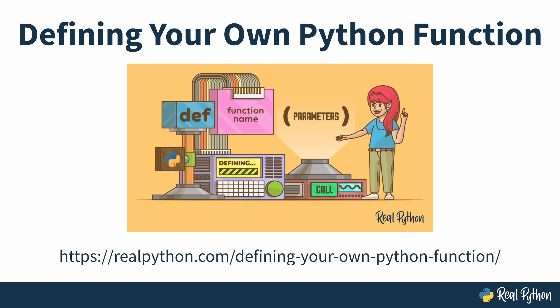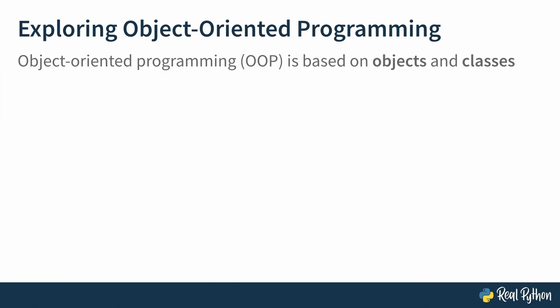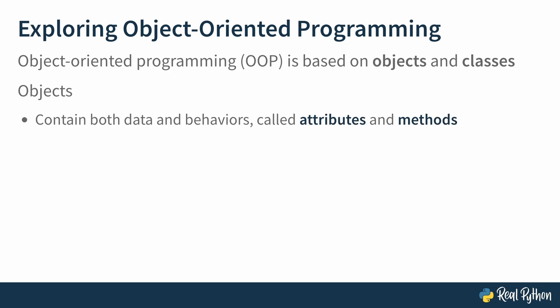Next up, we'll take a 10,000-foot view on object-oriented programming and its place in the Python ecosystem. OOP is a programming paradigm used in a wide variety of languages. At a basic level, it's all about structuring your code so that data, or properties, are grouped together with related behaviors, or actions.